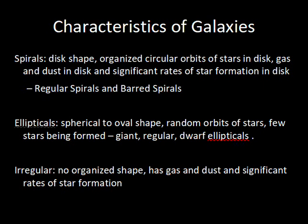So overall, spiral galaxies have a disk with stars in circular orbits, lots of concentrated gas and dust, and a high rate of star formation. Subcategories include regular spirals and barred spirals. Elliptical galaxies are spherical to oval in shape, with stars moving in all sorts of orientations — not organized into one rotation — and few stars being formed. There are giant ellipticals and, perhaps most abundantly, dwarf ellipticals, which are the most common type in our local area, though they can't be detected at great distances due to low light output.